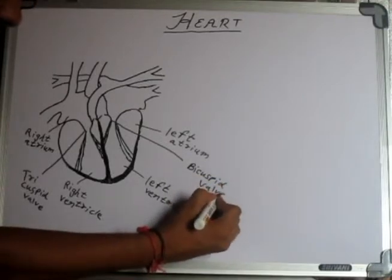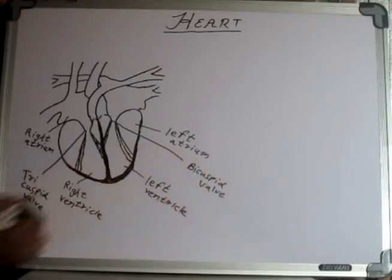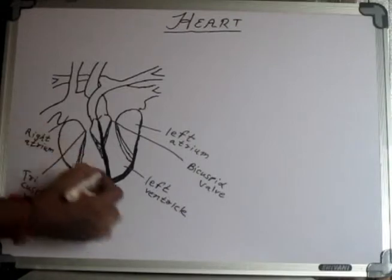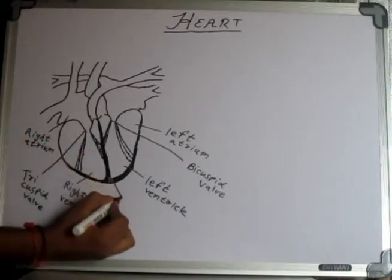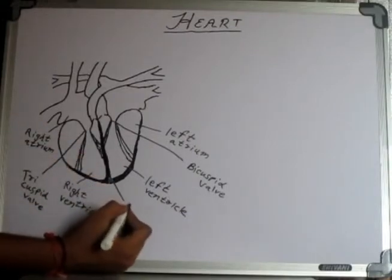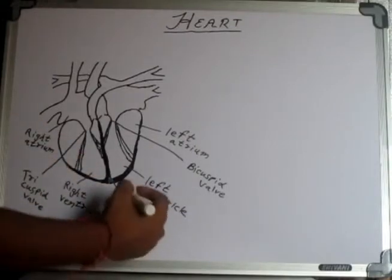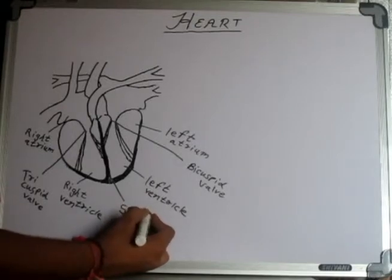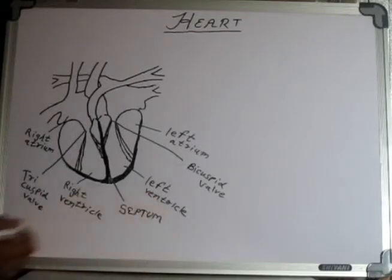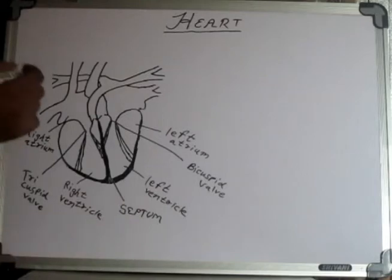This is the wall which separates the right chambers from the left chambers. This wall is called the septum. It exists so that the oxygenated blood and deoxygenated blood do not mix.